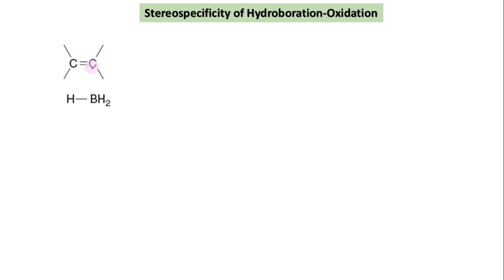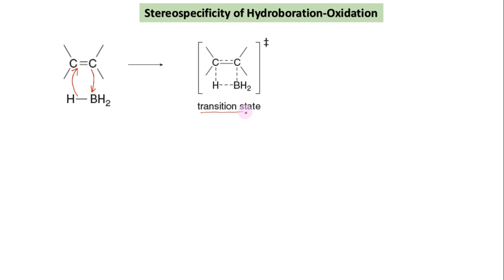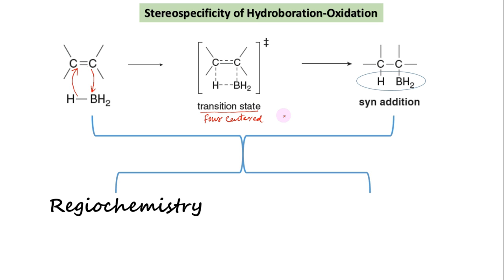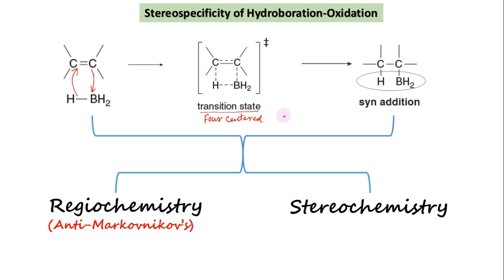The observed stereospecificity for hydroboration-oxidation is consistent with the first step of the proposed mechanism, in which H and BH2 are simultaneously added across the pi bond of the alkene. The concerted nature of this step requires that both groups add across the same face of the alkene, giving a syn addition. In this way, the proposed mechanism explains not only the regiochemistry, but also the stereochemistry.